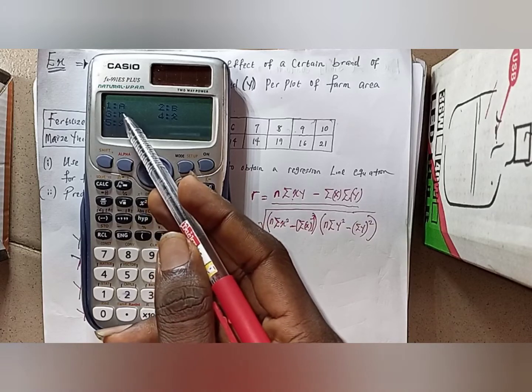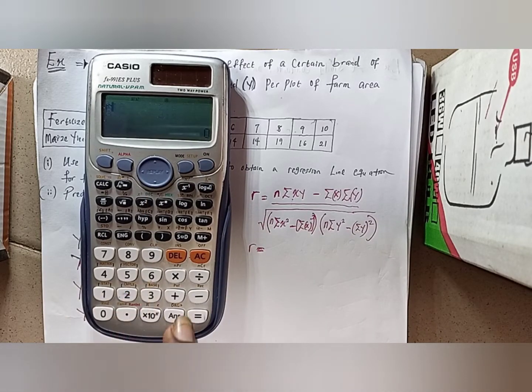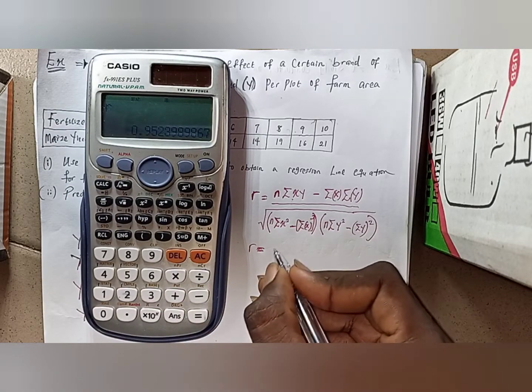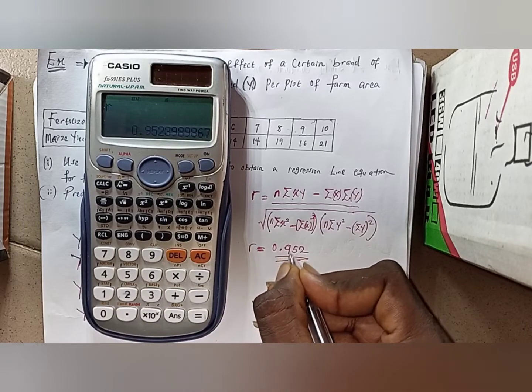The value of your R is already on this calculator which is number 3. If I press 3, R is displaying, and when I press equal to, the final answer is 0.952.